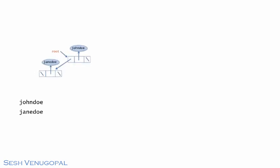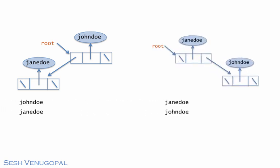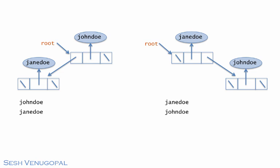In the first tree, John Doe signs up first, then Jane Doe, while the sequence is reversed in the second. Data in the BST is arranged in ascending alphabetical order, which means Jane Doe is less than John Doe.